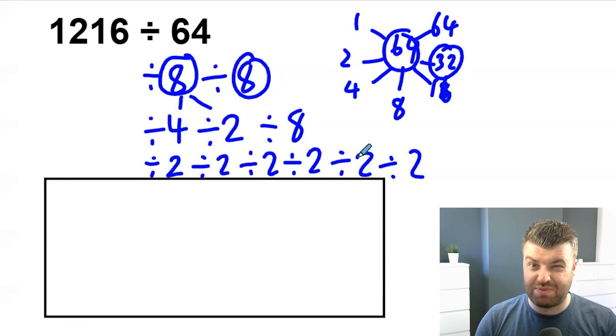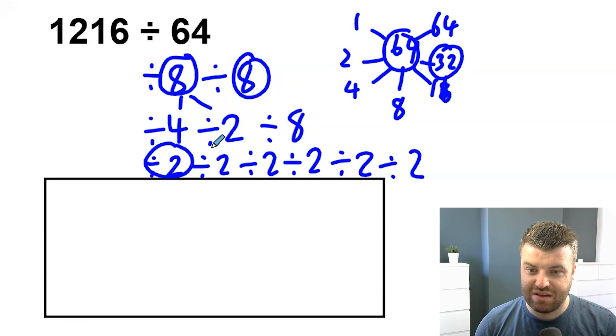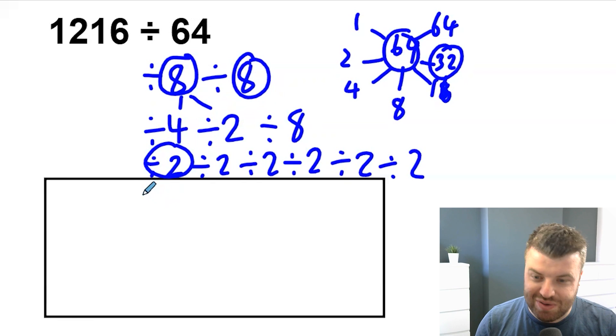We cannot split two up any further. If we had to split up two, we just split it into 1 times 2. And we still have the two. And dividing by 1 isn't going to help us at all. So once we got to the prime factors, you notice here actually to divide by 64, we can just halve our number six times. So I'm going to use my box to prove this instead of drawing up the squares now.